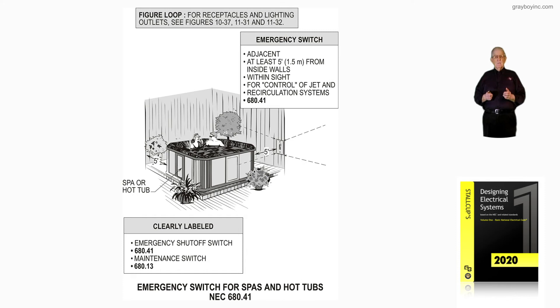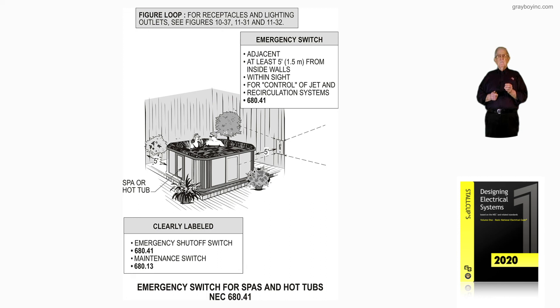The NEC loop again addresses receptacles and lighting fixtures in and around the pool so that you have a constant figure loop. You can see the items that mostly give trouble in and around these pools, SPAs, or hot tubs, whichever you're reviewing. The emergency switch is highlighted here — the boxed-in information states it must be adjacent, located within five feet from the inside walls of the SPA or hot tub, for control of the jet and recirculating system in accordance with 680.41.